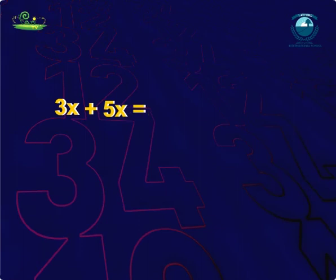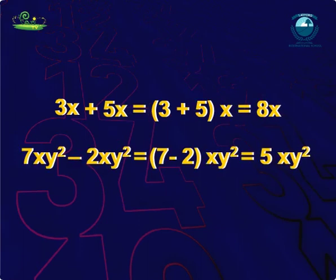Using the distributive law, we can add and subtract these like terms. We can simplify them like this: 3x plus 5x is equal to 3 plus 5 times x is equal to 8x. 7xy square minus 2xy square is equal to 7 minus 2 times xy square is equal to 5xy square.